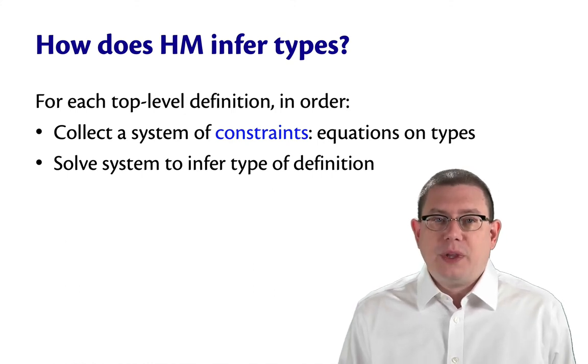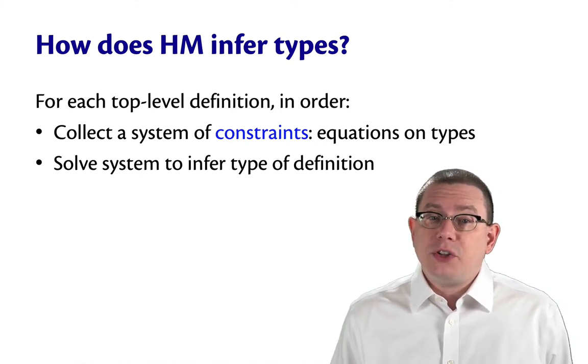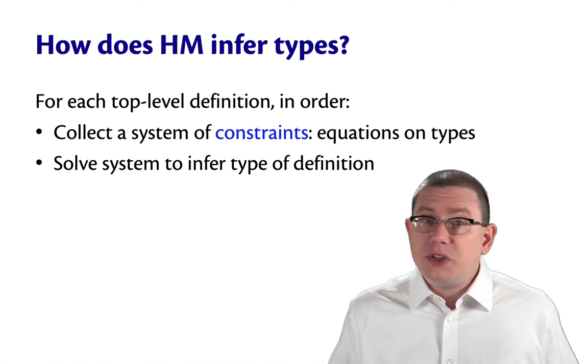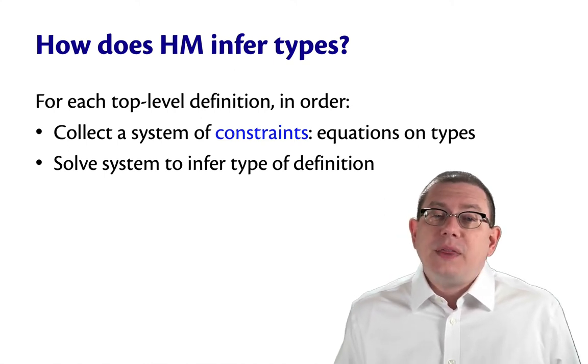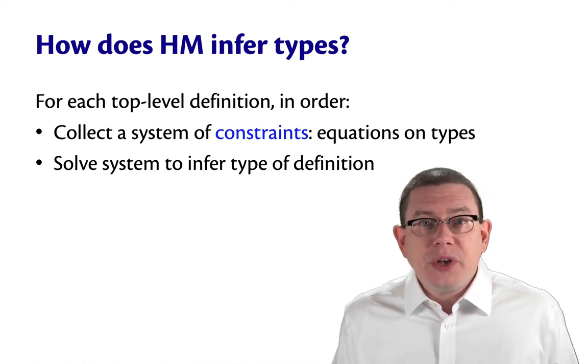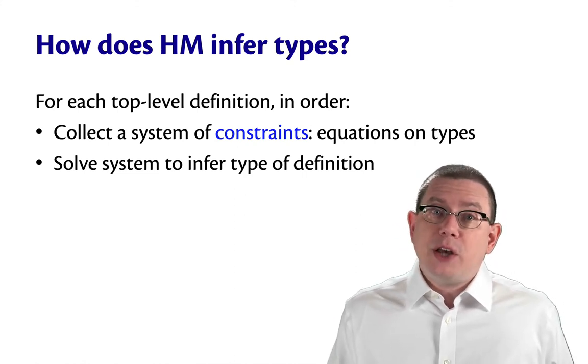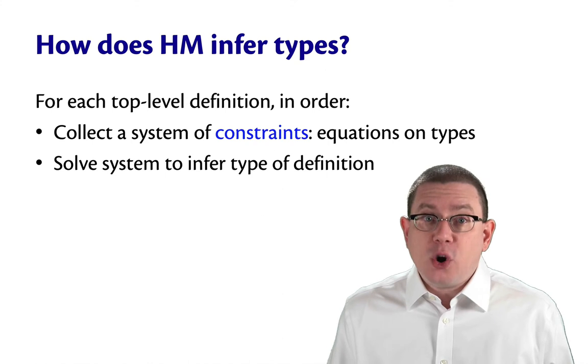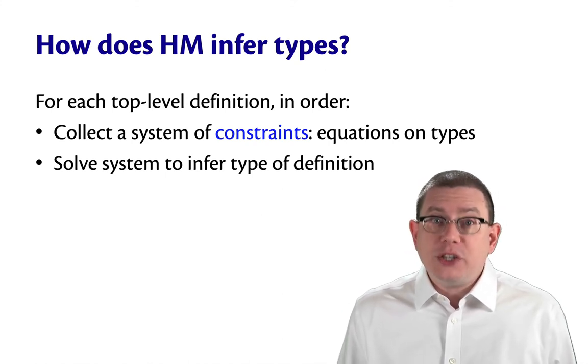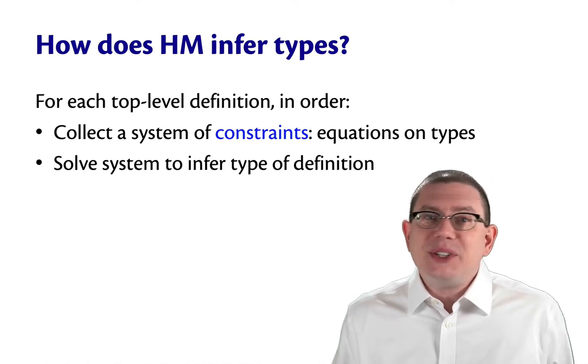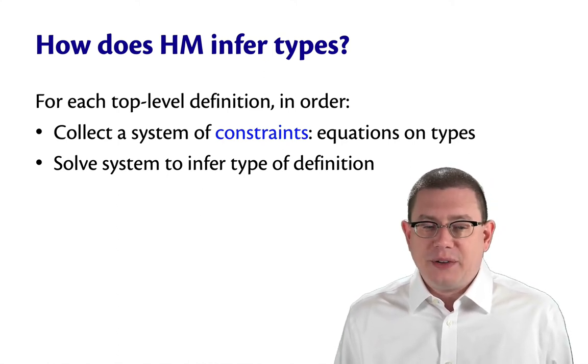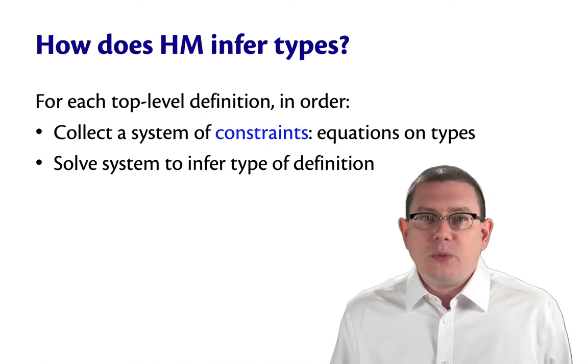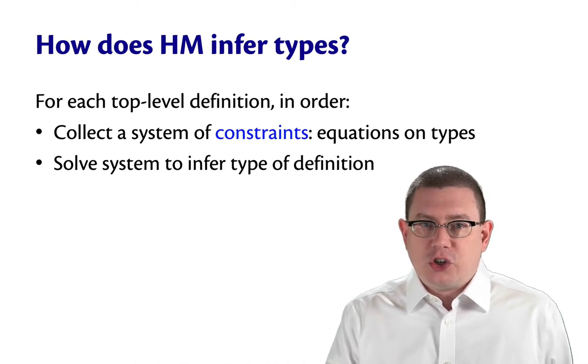So for each definition, HM is going to collect a system of constraints. So think of this in the sense of like an algebraic system of equations, like you learn to solve in high school math. These are equations, though, not on numbers, but on types, equalities that must hold between types. Then, after collecting that entire set of equations, that set of constraints, HM is going to solve it, similarly to how you might have learned Gaussian elimination to solve sets of equations in algebra. HM type inference will solve that set of equations and thereby infer the type of the expression that is being defined.